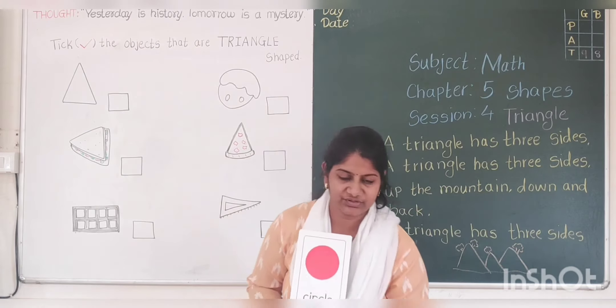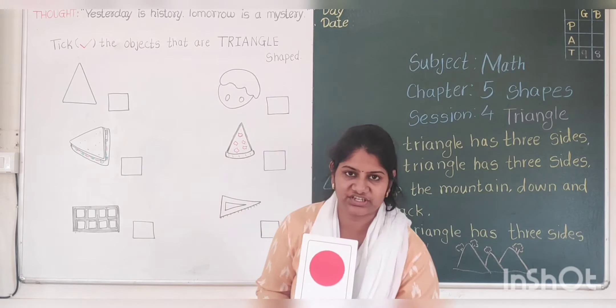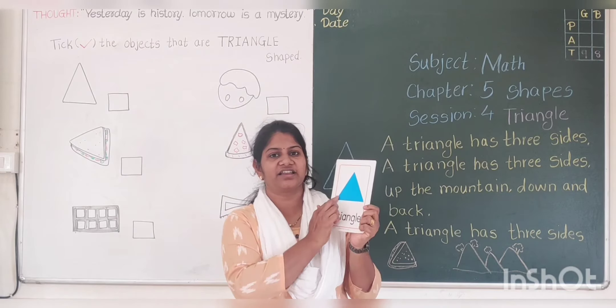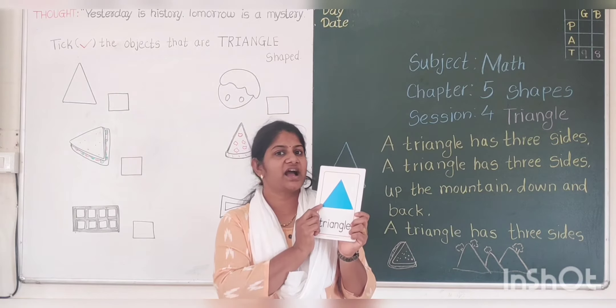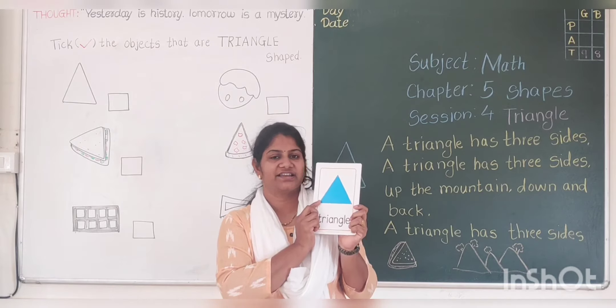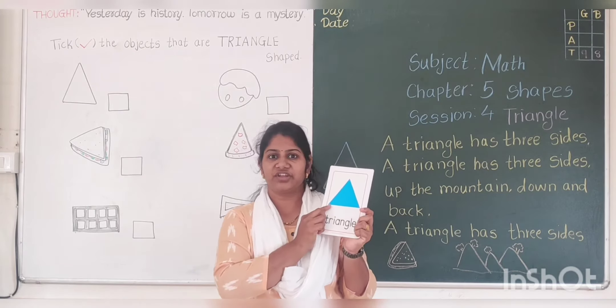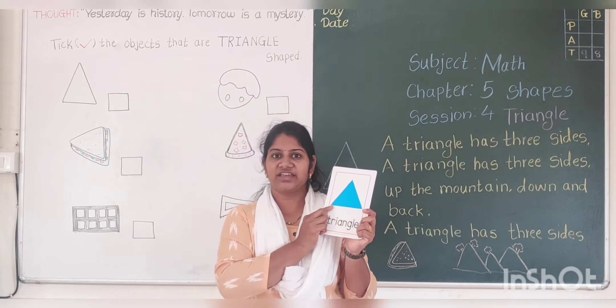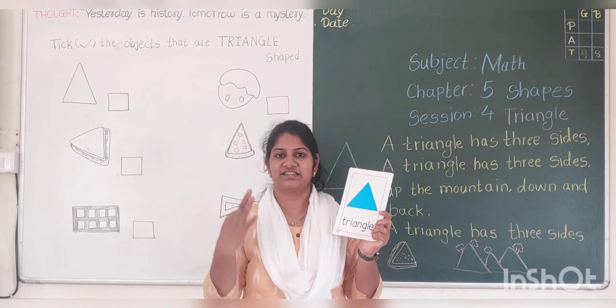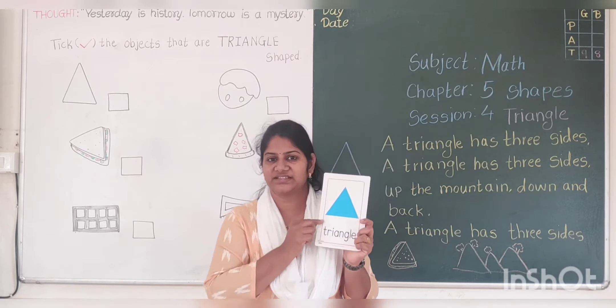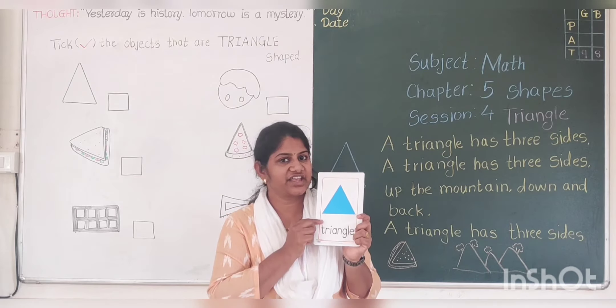And today I am going to teach you triangle shape. T-R-I-A-N-G-L-E. Triangle. Triangle has how many corners? Let's count. 1, 2, 3. 3 corners. And 1, 2, 3. 3 sides. 3 corners and 3 sides. This is triangle shape.